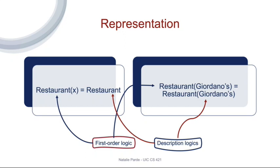Although in regular first-order logic you would represent a generic concept restaurant as restaurant(x), in description logics we just represent this by the category name restaurant. We represent specific restaurants the same way that we do in first-order logic.